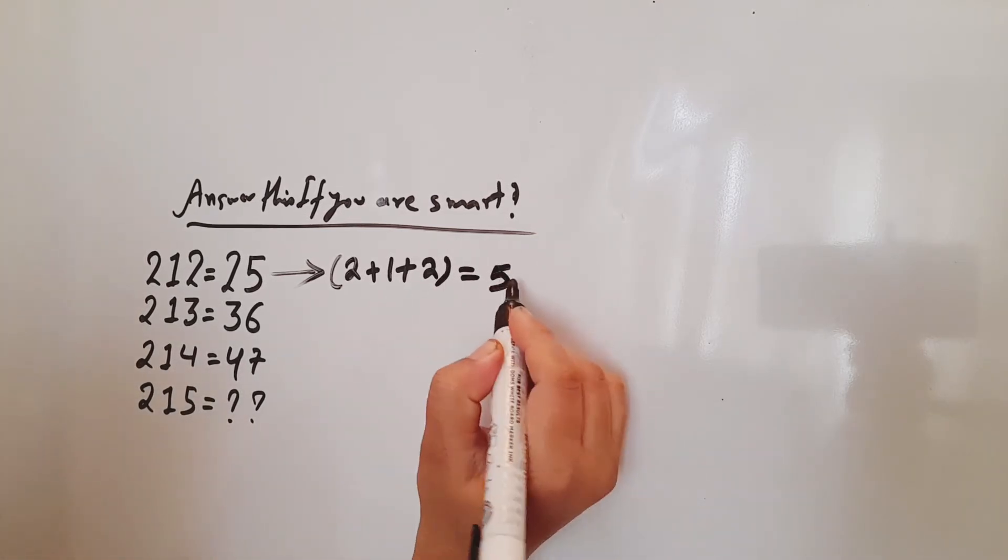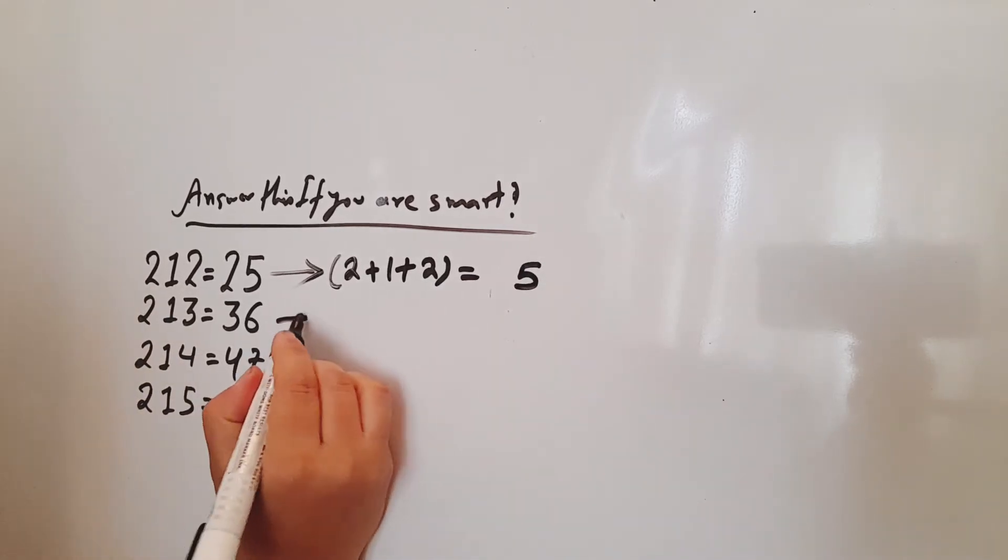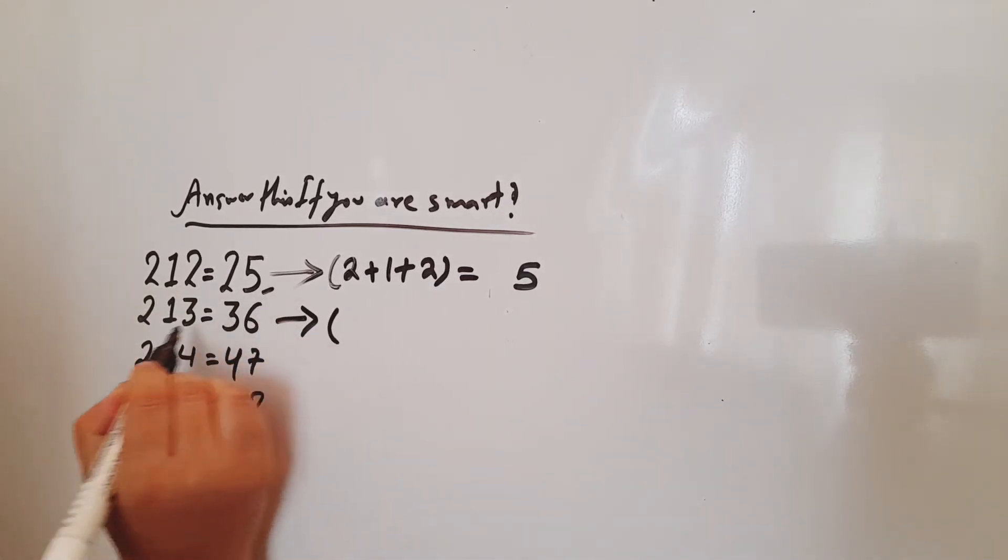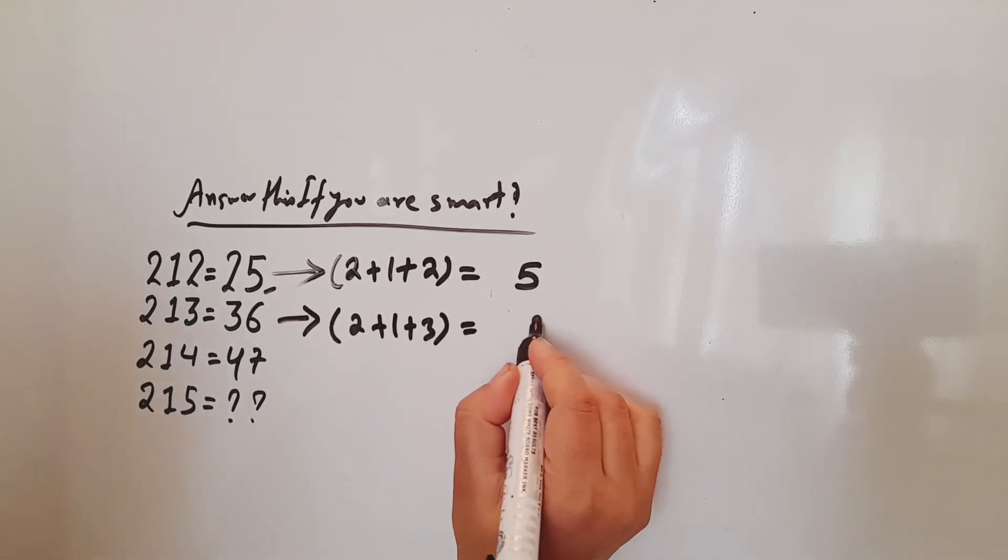212, we have to do 2 plus 1 plus 2, which equals 5. Next, 213, 2 plus 1 plus 3, we have to do 6.